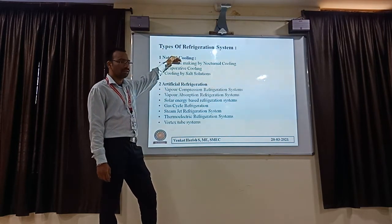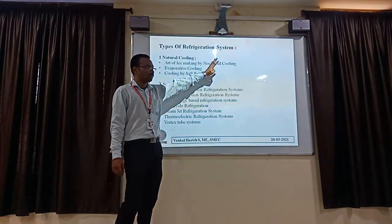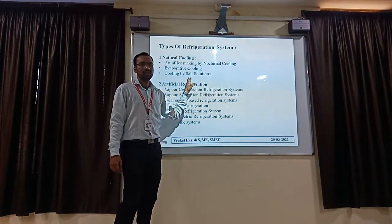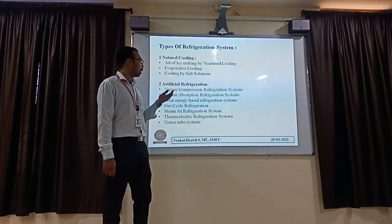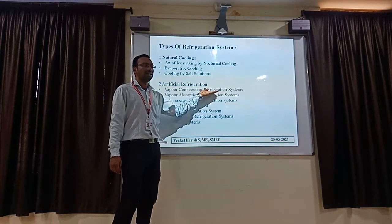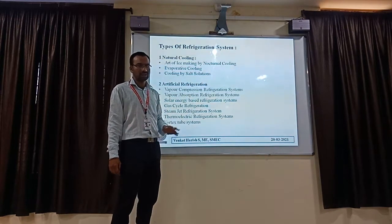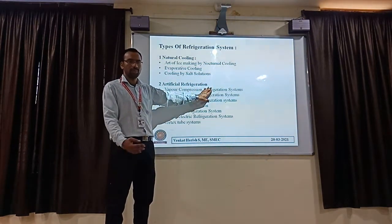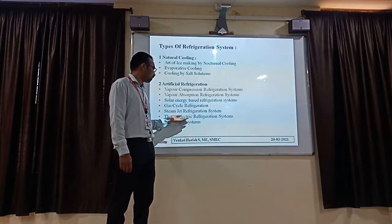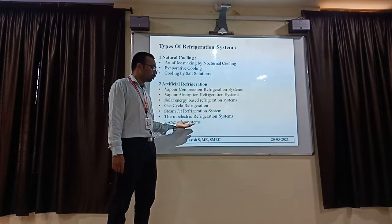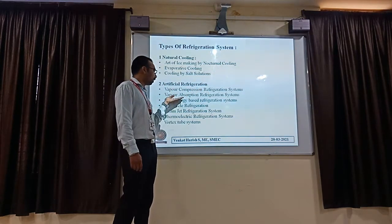First one is natural cooling. How we can get lower temperature naturally: first is the art of ice making by natural cooling; next is evaporative cooling; next is cooling by saline solution — these are done by the natural process in the atmosphere. Coming to artificial — that is human-made cooling: first, the vapor compression refrigeration system, which is the most important; second, the vapor absorption system. These two are most widely and commonly used refrigeration systems in all industries. The remaining types are solar energy, gas cycle refrigeration, steam jet refrigeration, thermal refrigeration system, and vortex tube refrigeration. In your syllabus, only vapor compression and vapor absorption refrigeration are discussed in detail.